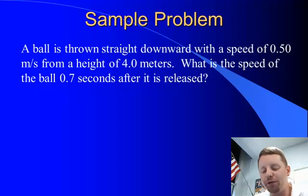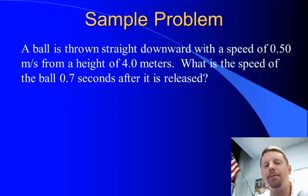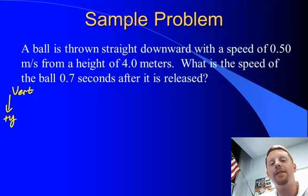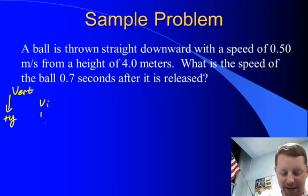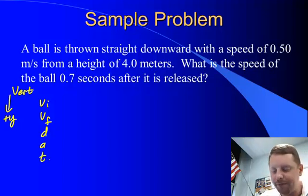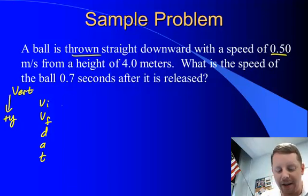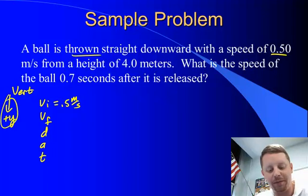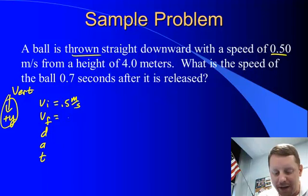Now we have a ball thrown straight downward with a speed of 0.5 meters per second from a height of 4 meters. What is its speed 0.7 seconds after it is released? This is a vertical motion problem again — it starts off going down, so down is our positive y direction. We can make our vertical motion table: vi, vf, d, a, t.